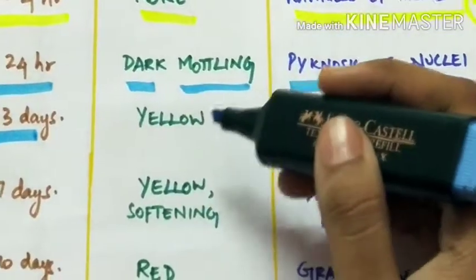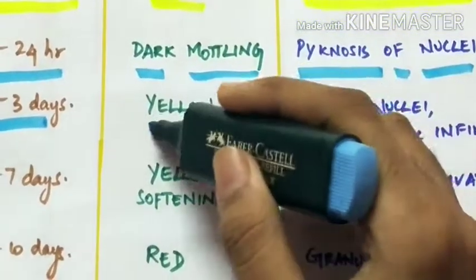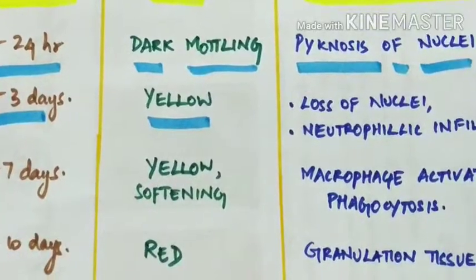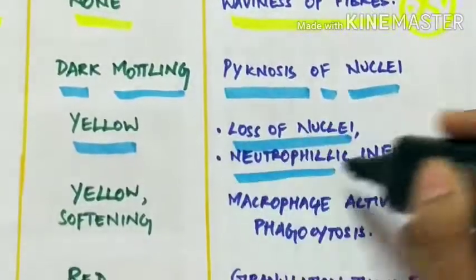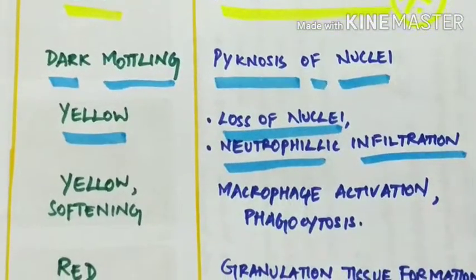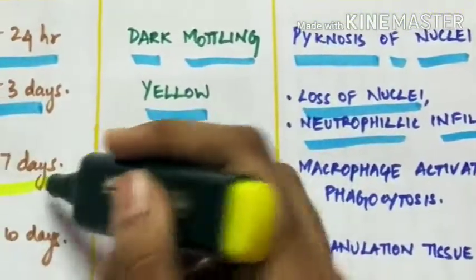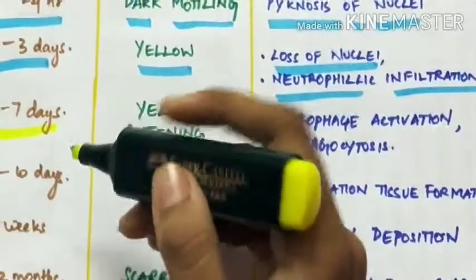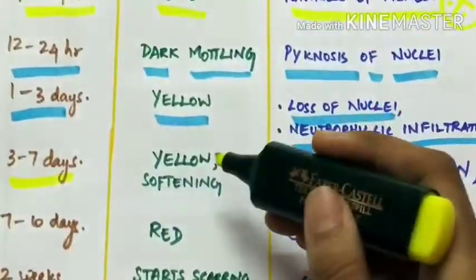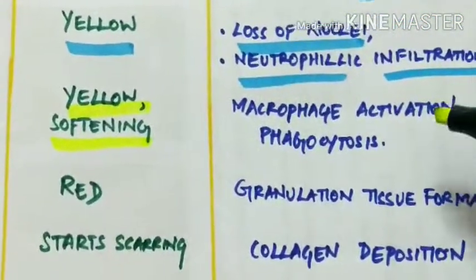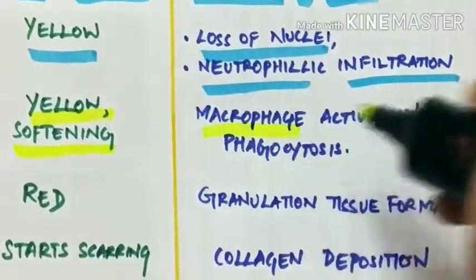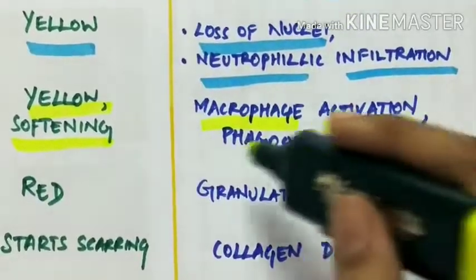In 1 to 3 days, the heart starts appearing yellowish grossly, and light microscopy shows loss of nuclei along with neutrophilic infiltration. In 3 to 7 days, the heart becomes yellow and softened, and light microscopy shows macrophage activation and phagocytosis.